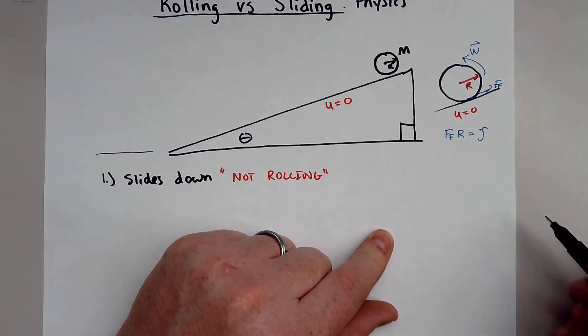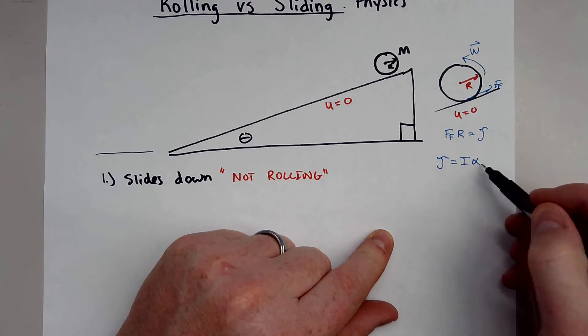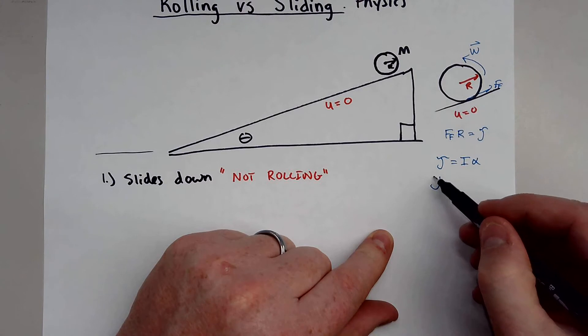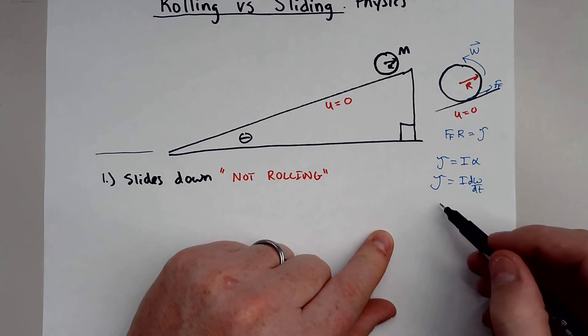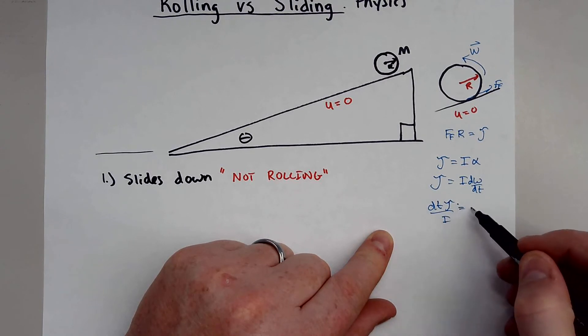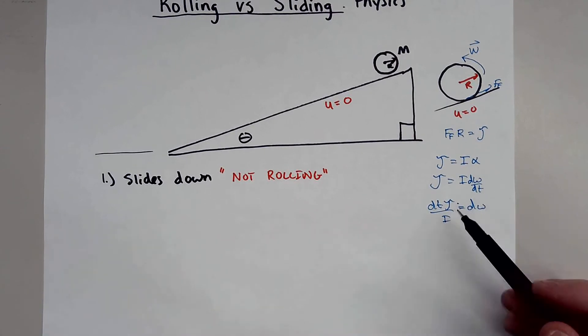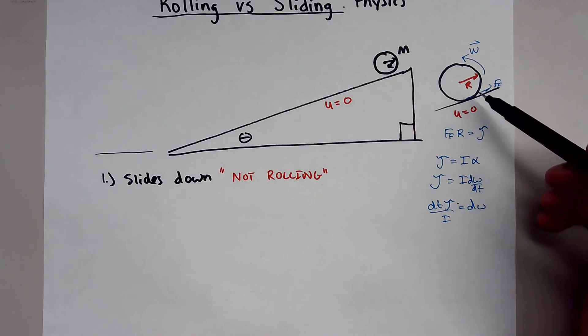And we know that torque is equal to I alpha. And we can even rewrite this as I omega, D omega over Dt. So Dt of torque divided by I is equal to a change in omega. So this torque can actually produce an object to rotate.